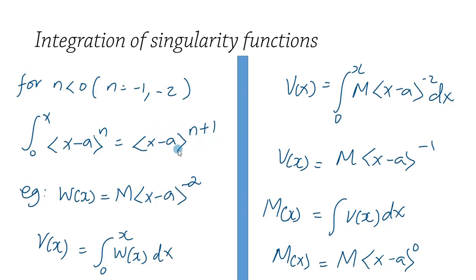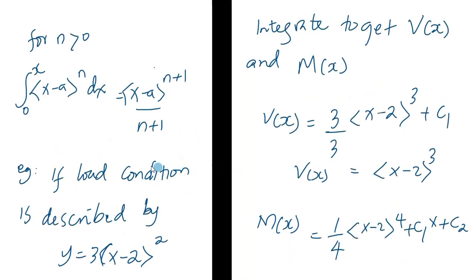That rule applies for n less than zero. Where n is greater than zero, we use the standard rule: the integral from zero to x of (x minus a) to the power n with respect to x gives (x minus a) to the power n plus one, divided by n plus one.